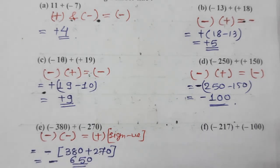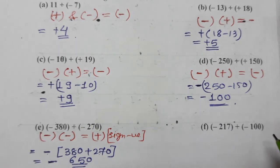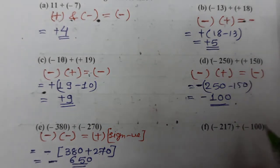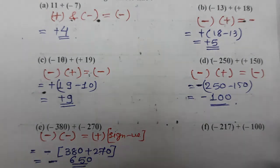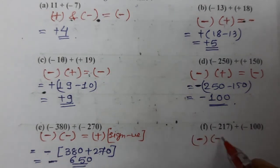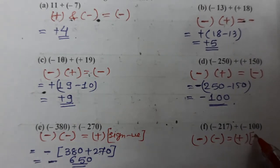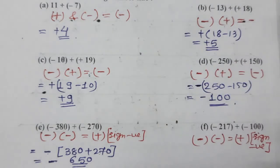Minus 650. Minus 650 is the answer. Now comes the last one, (f). Again both are minus. If both are minus, that means we have to add. Minus minus, we have to do plus. We have to do plus, but which sign? Negative sign. So let's add them.